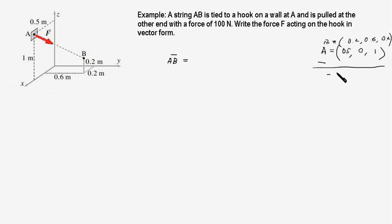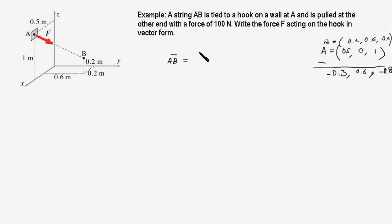We subtract the coordinates of A from B. For x: 0.2 − 0.5 = −0.3. For y: 0.6 − 0 = +0.6. For z: 0.2 − 1 = −0.8. These are the increments and decrements along the x, y, and z axes as we move from A to B. So the relative position vector AB is −0.3 i-hat + 0.6 j-hat − 0.8 k-hat.